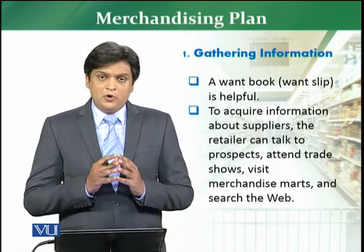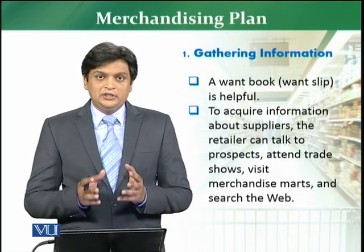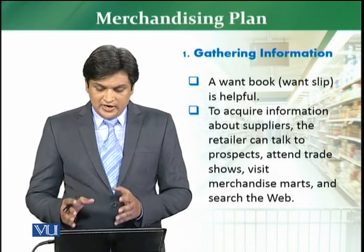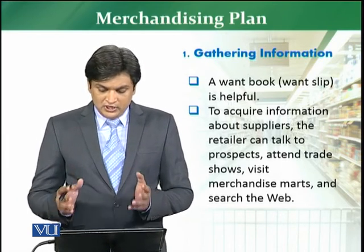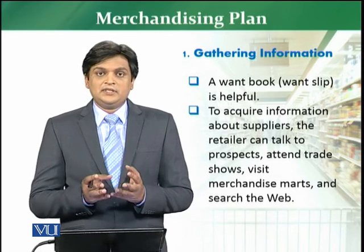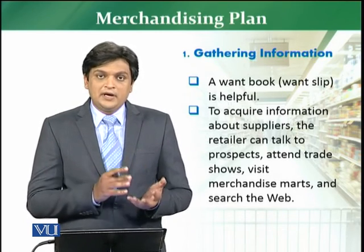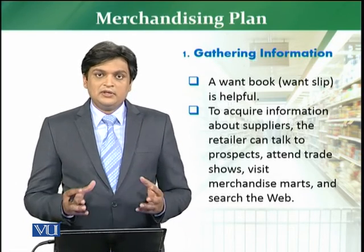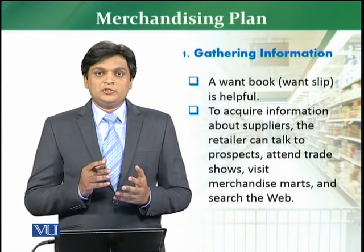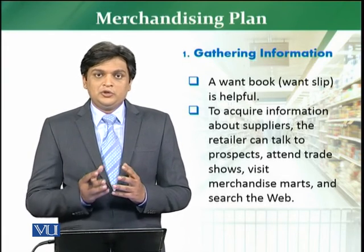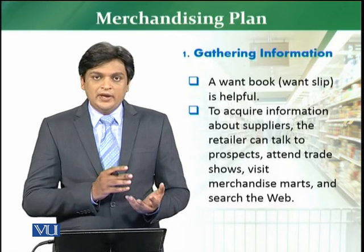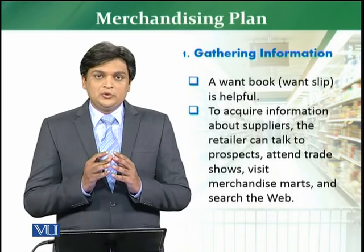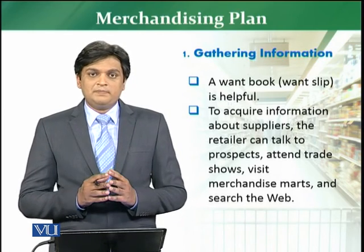A want book — also called a want slip — is normally helpful in gathering data about customers and suppliers. To acquire this information, you need to arrange visits. These visits are either done through a third party who is expert at gathering this information, or through your own staff. However, because people know which person is associated with which company, it can be challenging to get accurate information this way. So the best practice is to gather this information through a third-party outsource.